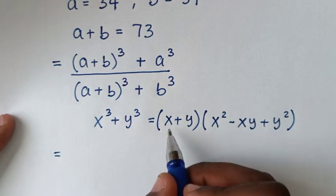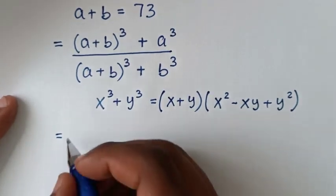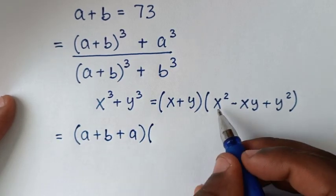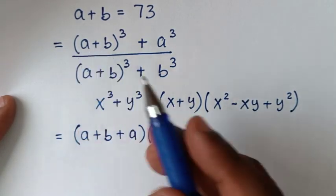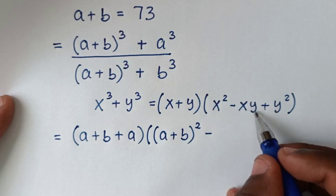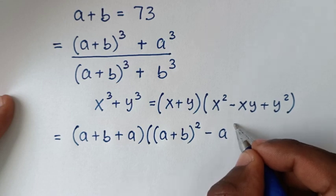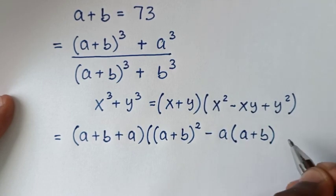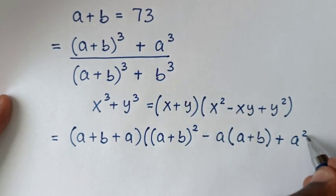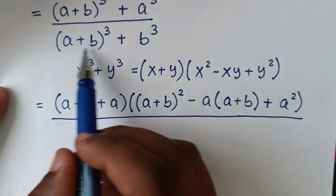In the numerator, x plus y is (a plus b) plus a, so the first factor is (a plus b plus a). Then x squared is (a plus b) squared, minus xy is (a plus b) times a, plus y squared is a squared.